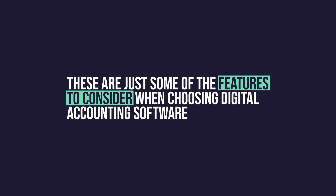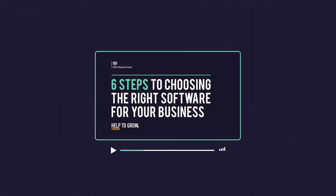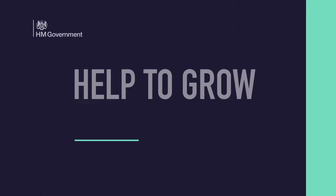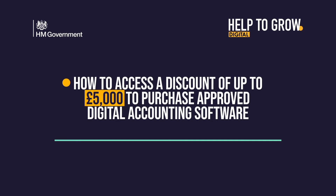Next steps. These are just some of the features to consider when choosing digital accounting software. Our six-step adoption guide has a helpful checklist to see whether digital accounting or another software is the right choice for you. Explore Help to Grow Digital to find out more, including how to access a discount of up to £5,000 to purchase approved digital accounting software.